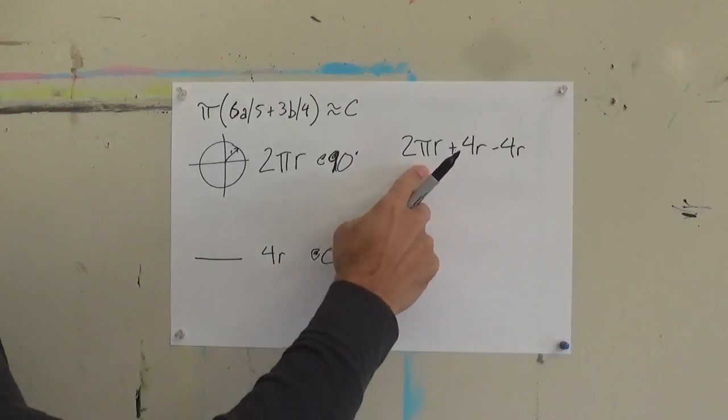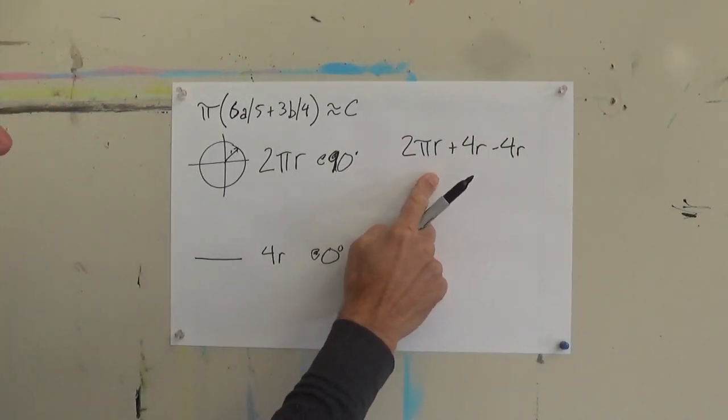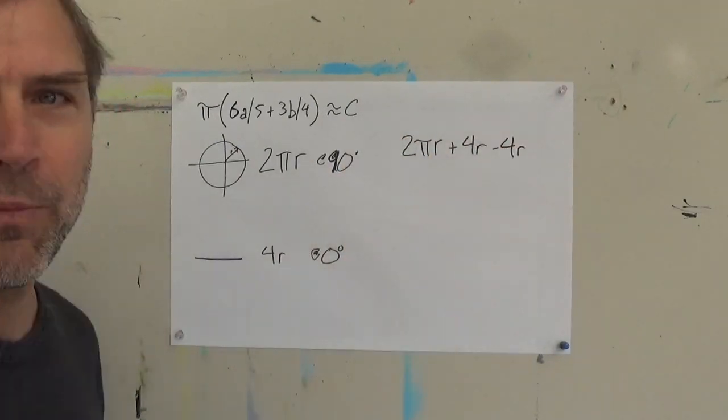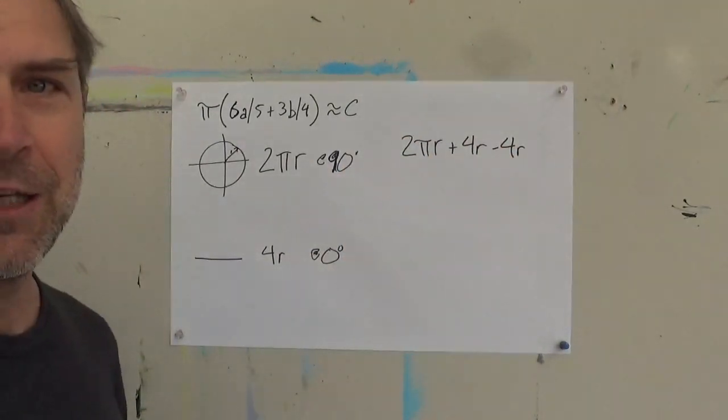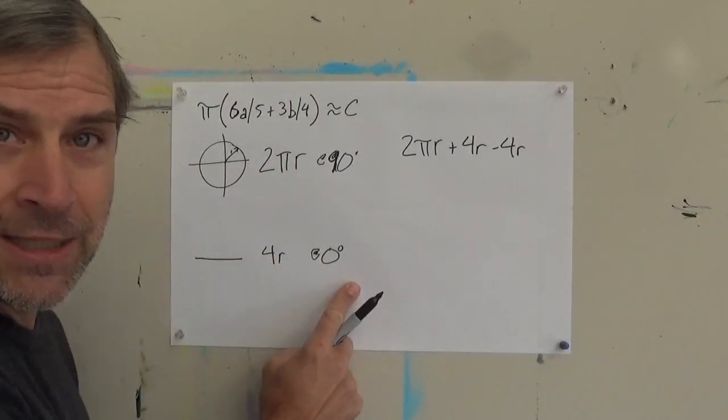So this is obviously the equation for a circle. Now I have to figure out how to get this 2 pi r and this 4 r term, this negative 4 r term, to go away when I'm looking at a 0 degree circle.